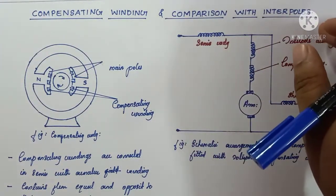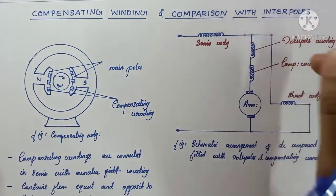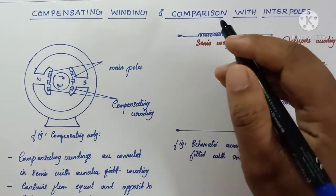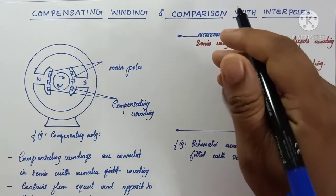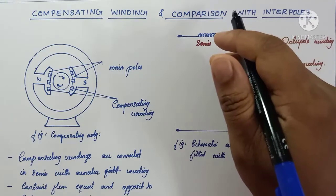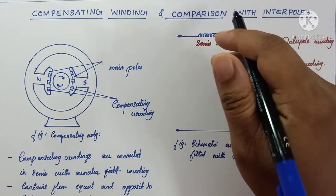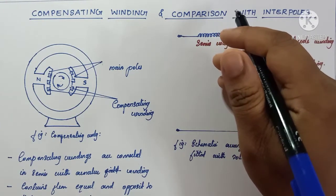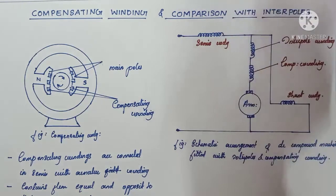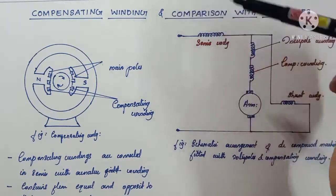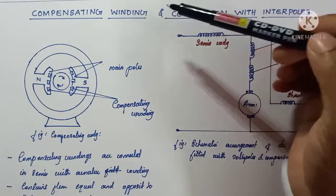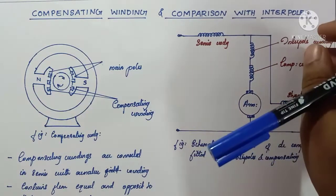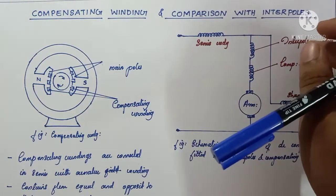These are the major methods to improve commutation for DC machines. Here we discussed compensating windings in detail and in comparison with interpoles.